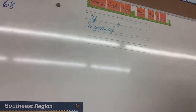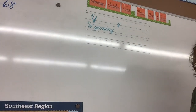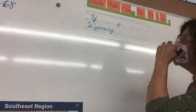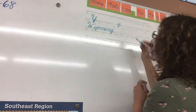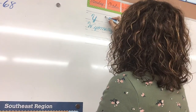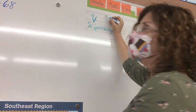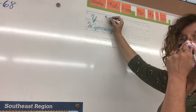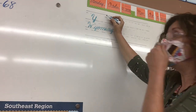Today for apprenticeship, we are doing page 31, and we are up to the letter Y. It's up here. What letter does it look like that we've already done? U, except it has a tail.